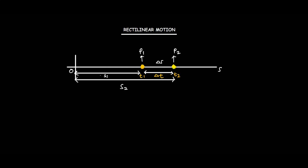We are going to learn about rectilinear motion. Rectilinear motion is the motion of an object or a particle on a straight path. In this figure, I have a particle here. At first this particle was at position P1, and then later on it moved towards position P2. This particle has two different positions at two different times and at two different distances from the origin. Time here is measured in seconds and the distance s is measured in meters or feet.